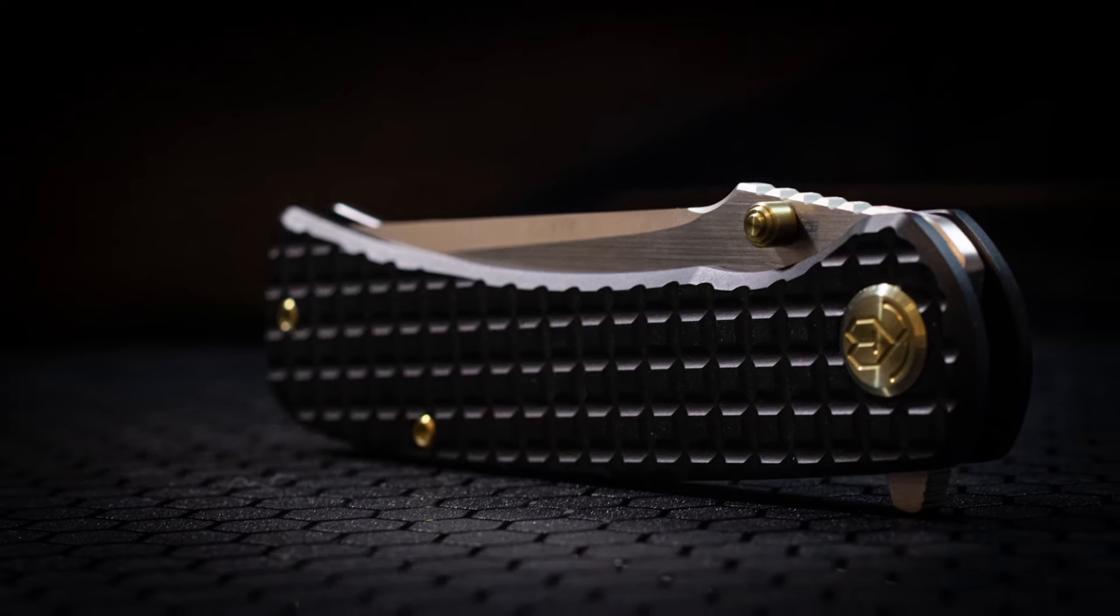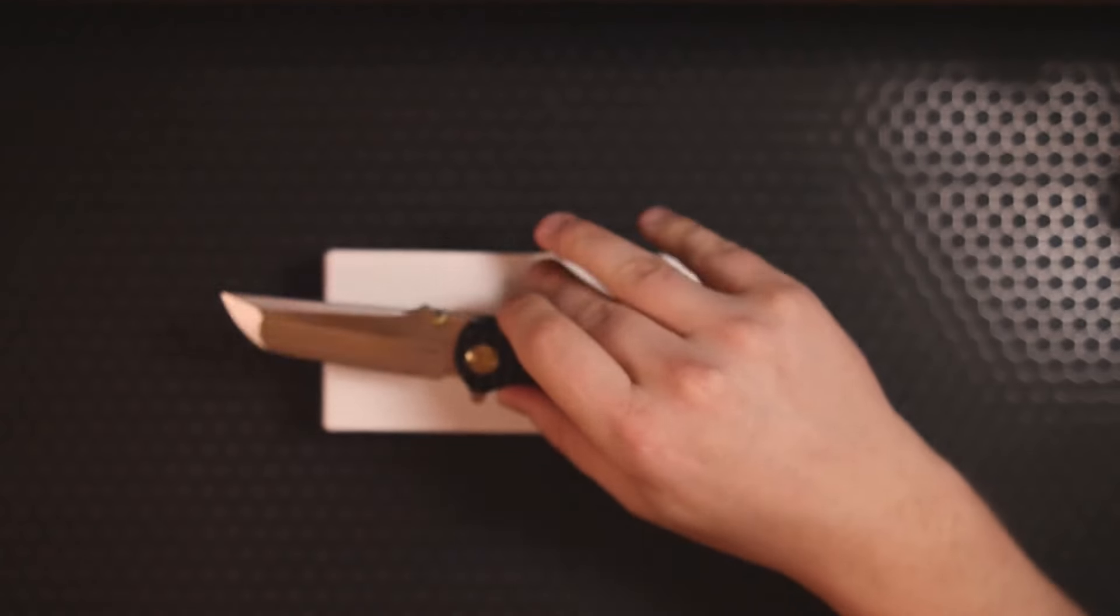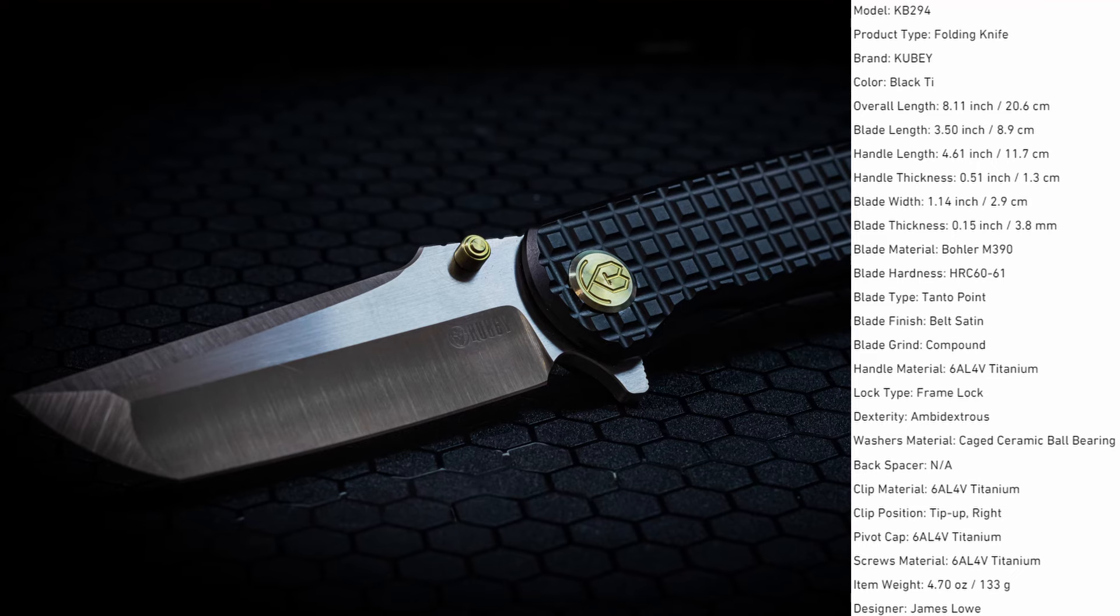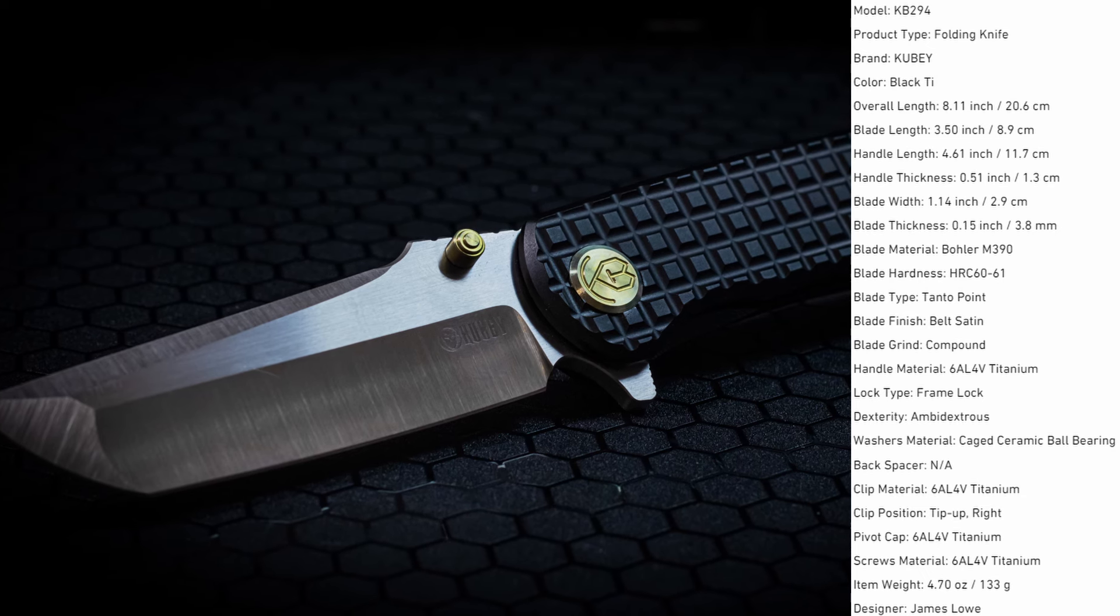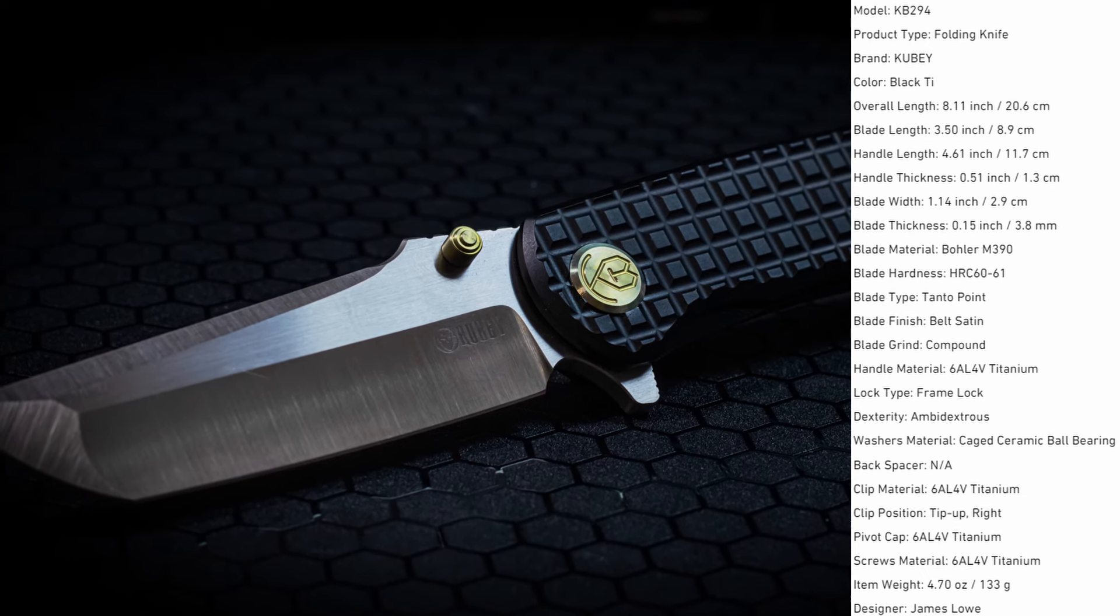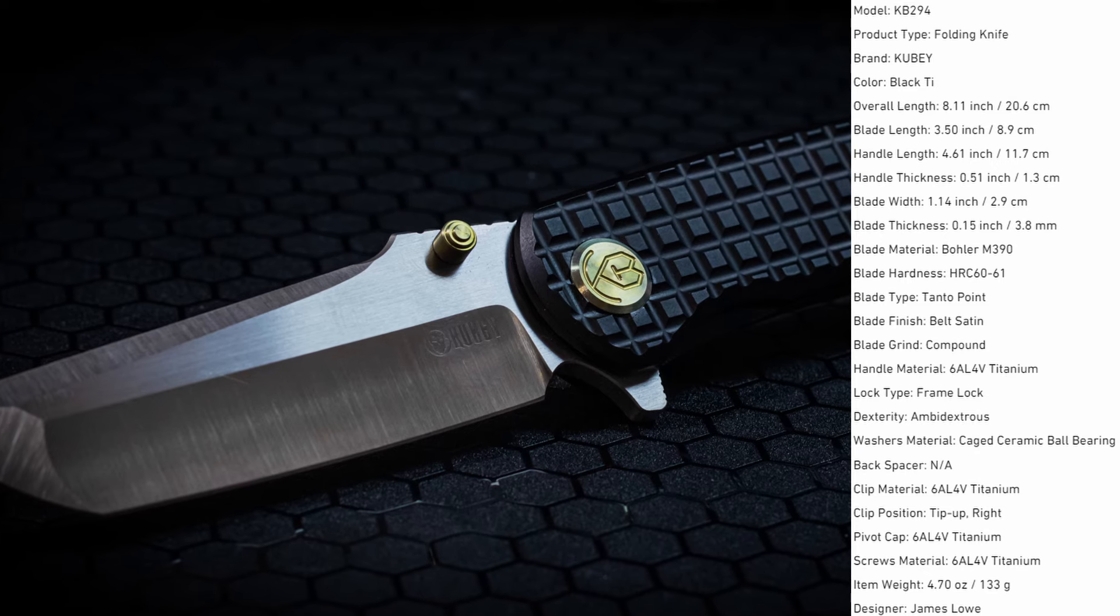Now you might be wondering that sounds all good and well but what's it made out of and what does it cost? Starting off we're looking at an overall length coming in at just over eight inches long with a three and a half inch blade. This blade is made of Bohler M390 that's been heat treated to 60 to 61 HRC.